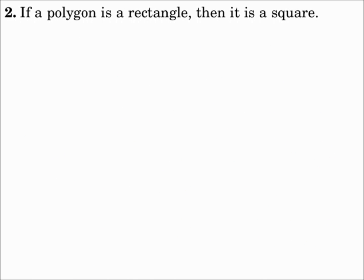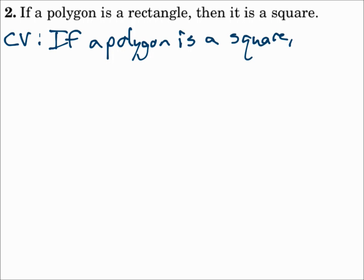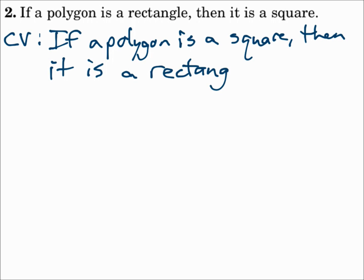Number 2: If a polygon is a rectangle, then it is a square. The converse flips it. Be grammatically correct and say: if a polygon is a square, then it is a rectangle. That's true.